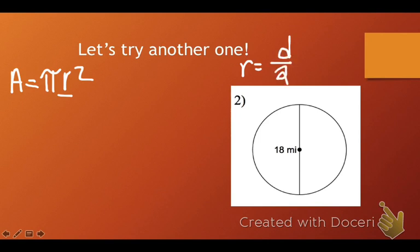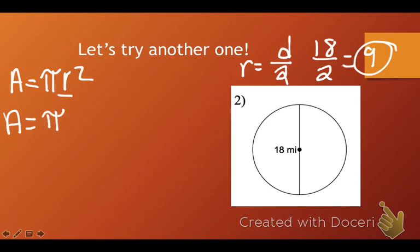Which is pretty easy. Here, 18, we take 18, divided by 2, which equals 9. So, the radius is going to be 9. So, we're going to take A equals pi times 9 squared.